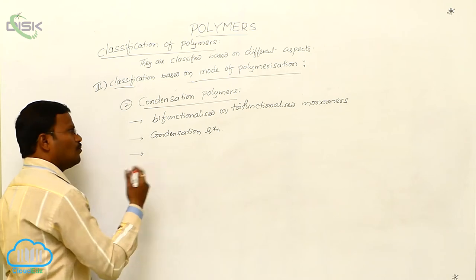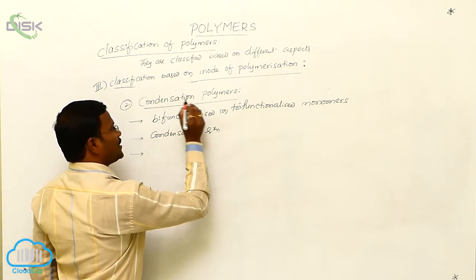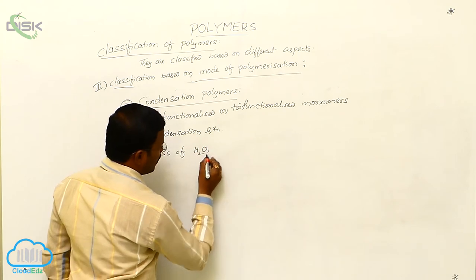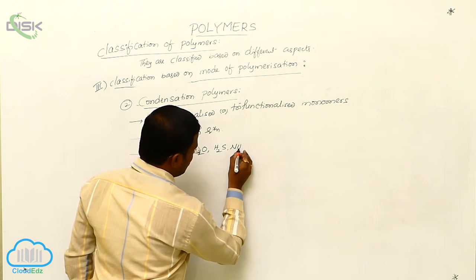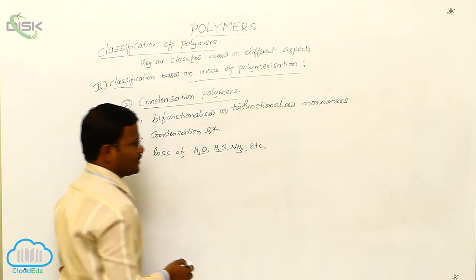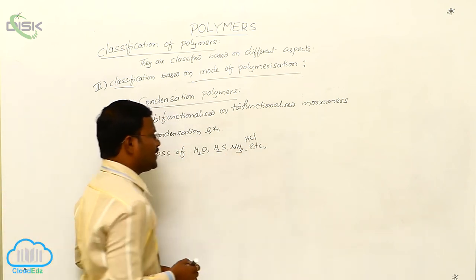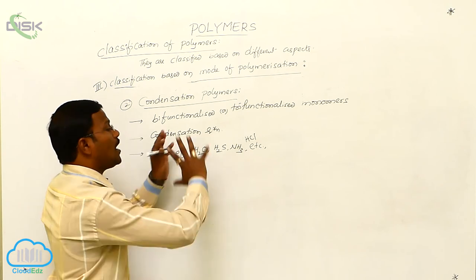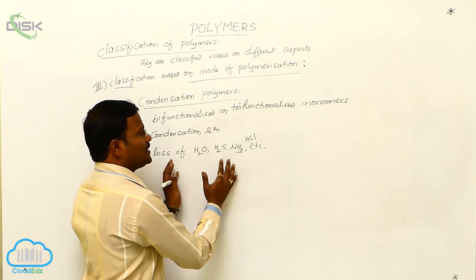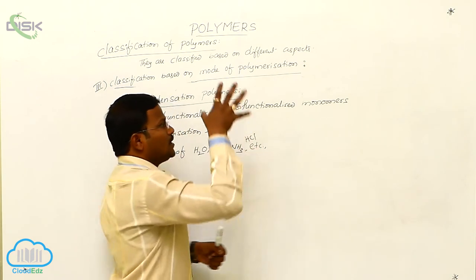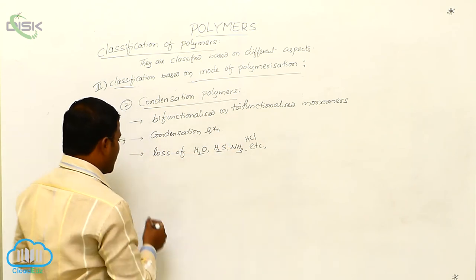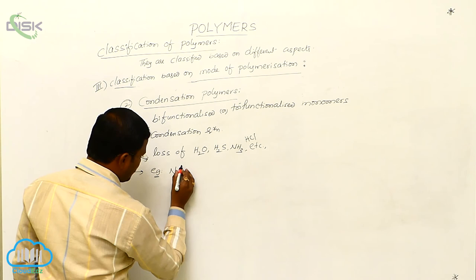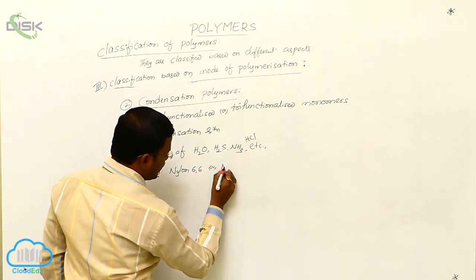During the preparation of condensation polymers, loss of small molecules such as water, H2S, ammonia, or HCl takes place. These neutral species are eliminated by the reaction between two or more monomers, and the polymers formed through this process are called condensation polymers. Examples of condensation polymers include Nylon 6,6 and Nylon 6.